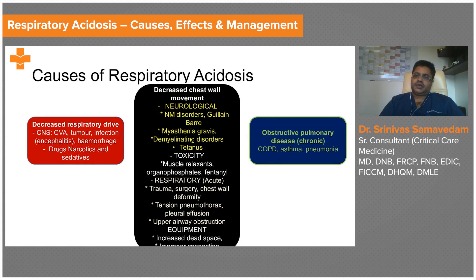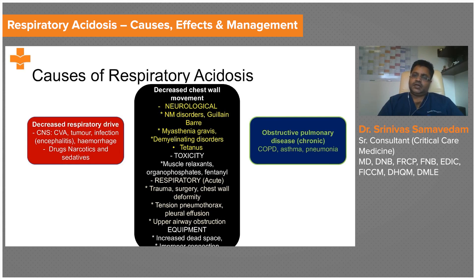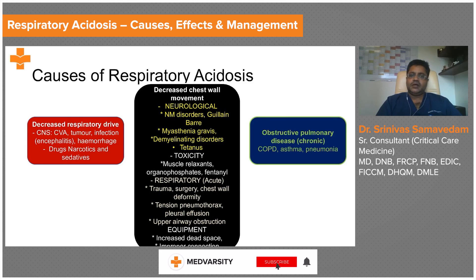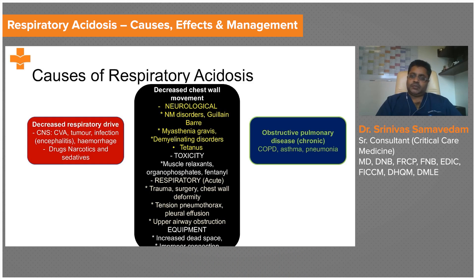The causes of respiratory acidosis can be grouped by decreased respiratory drive, decreased chest wall movements, toxicity or equipment problems, or obstructive pulmonary disease. Respiratory drive can be reduced by a cerebrovascular accident, a CNS tumor suppressing the respiratory center, infections like encephalitis, or drugs like opioids and sedatives such as benzodiazepines, all of which can depress the respiratory drive and cause CO2 to rise.